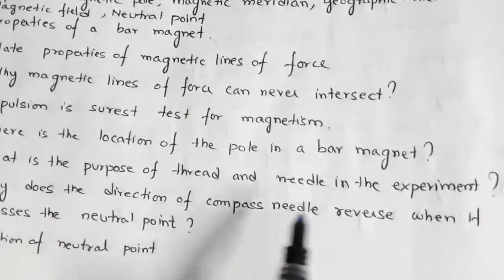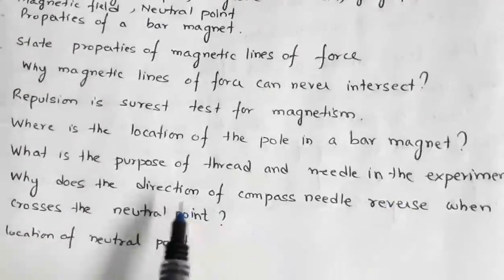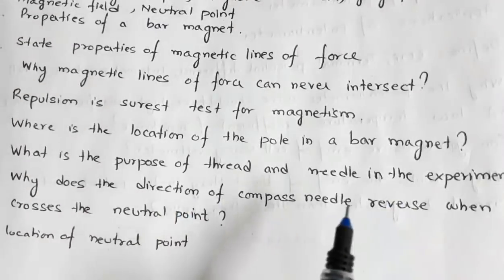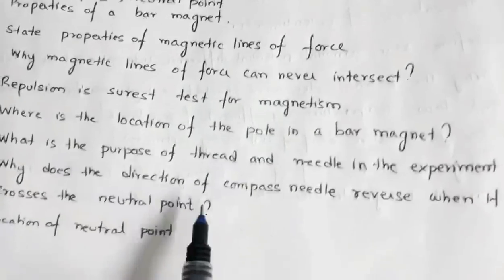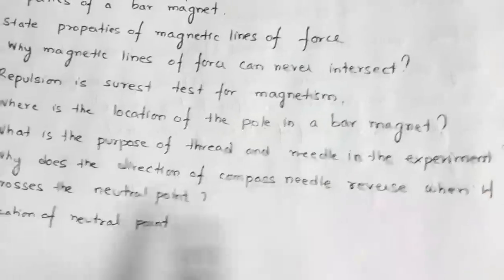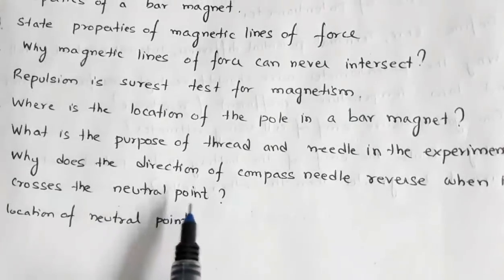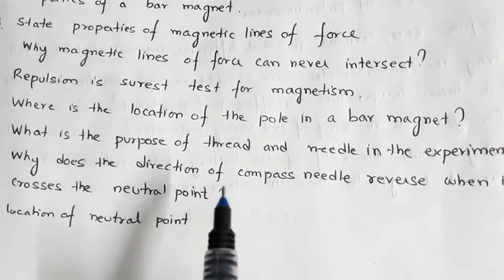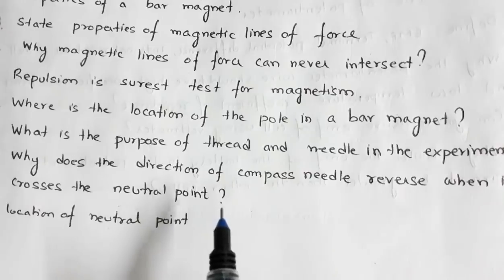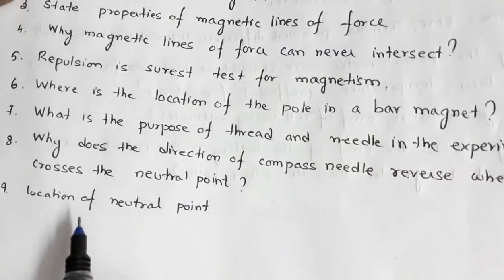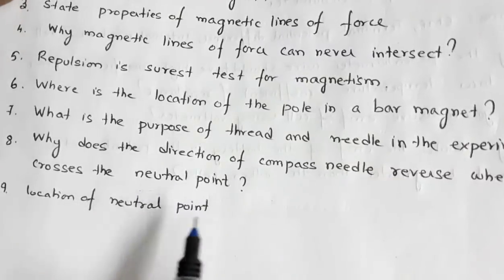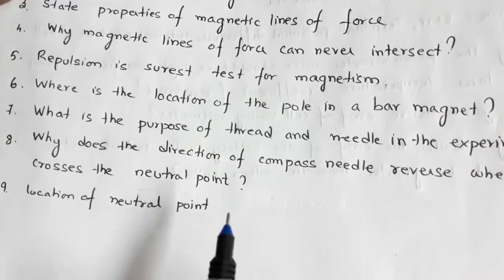Where is the location of the pole in a bar magnet? It is slightly inside the magnet. What is the purpose of the thread and needle in the experiment? They are used to mark the magnetic meridian. Why does the direction of the compass needle reverse when it crosses the neutral point? Because on one side of the neutral point there is the magnetic field of the magnet, and on the other side there is the magnetic field of the Earth.